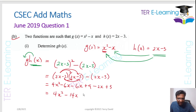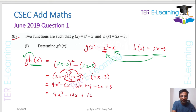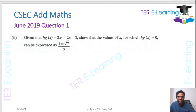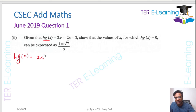Simplifying: 4x² − 12x − 2x = −14x, and 9 + 3 = 12. So g(h(x)) = 4x² − 14x + 12. Now for the next part, they've told us that h(g(x)) = 2x² − 2x − 3.